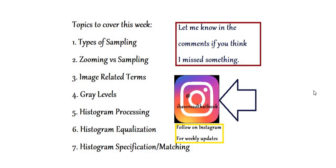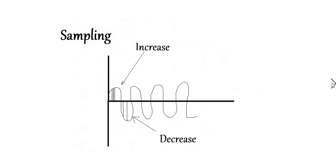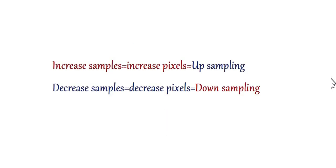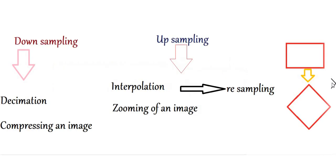In this video we are going to talk about types of sampling. As you already know from the previous video, sampling is related to pixels or spatial resolution. When we talk about types of sampling, we are either trying to increase the samples — and hence increase the number of pixels — or decrease the samples and hence decrease the number of pixels. Increasing pixels is called upsampling, and decreasing is called downsampling.